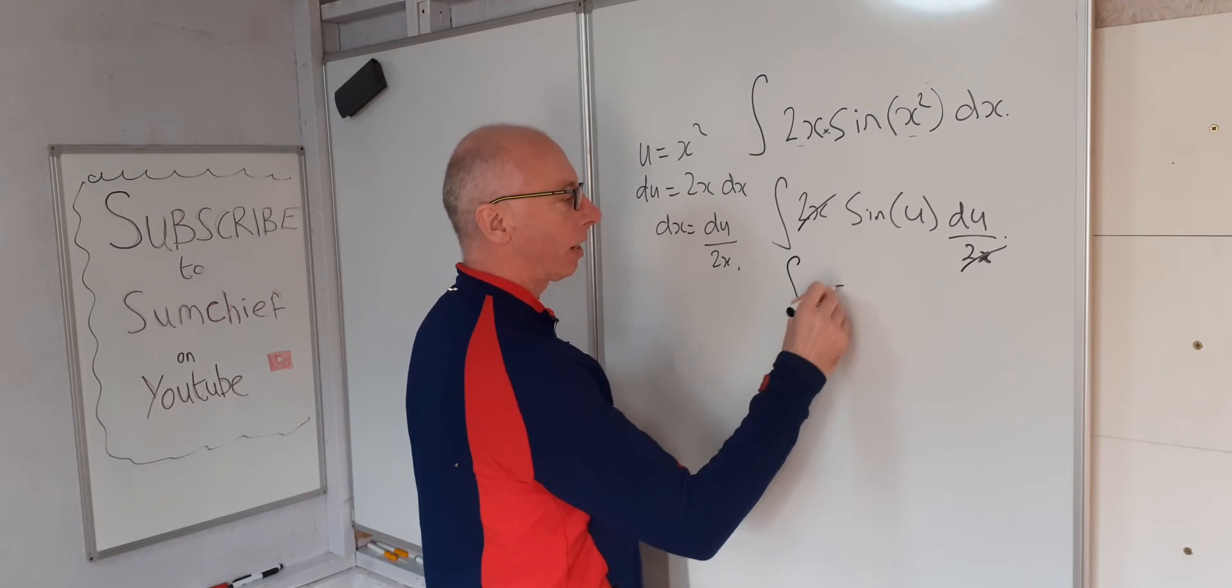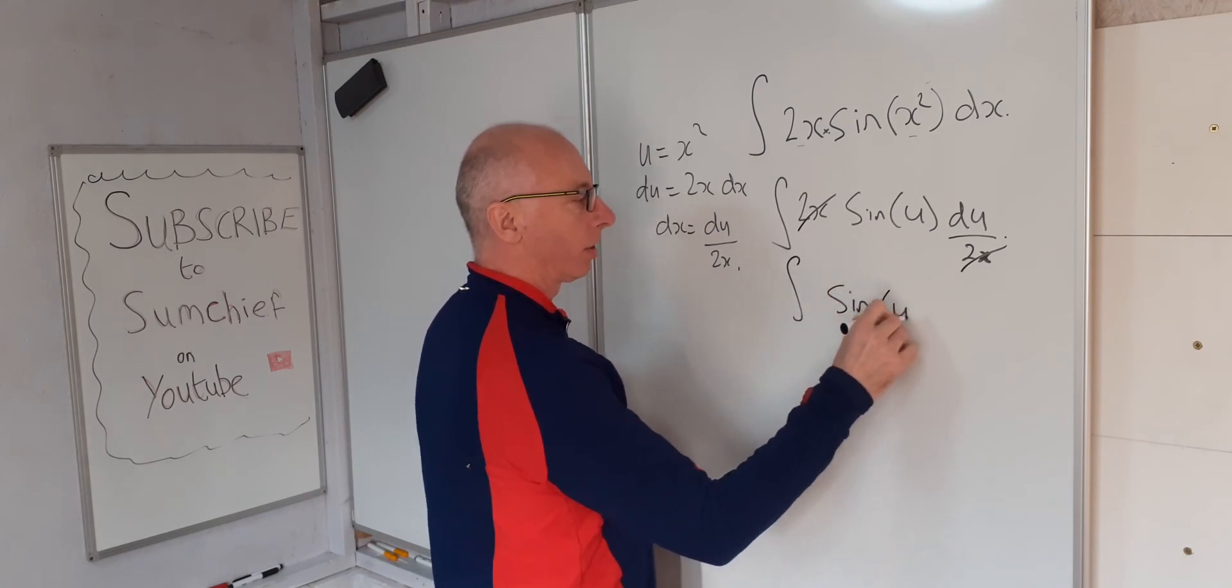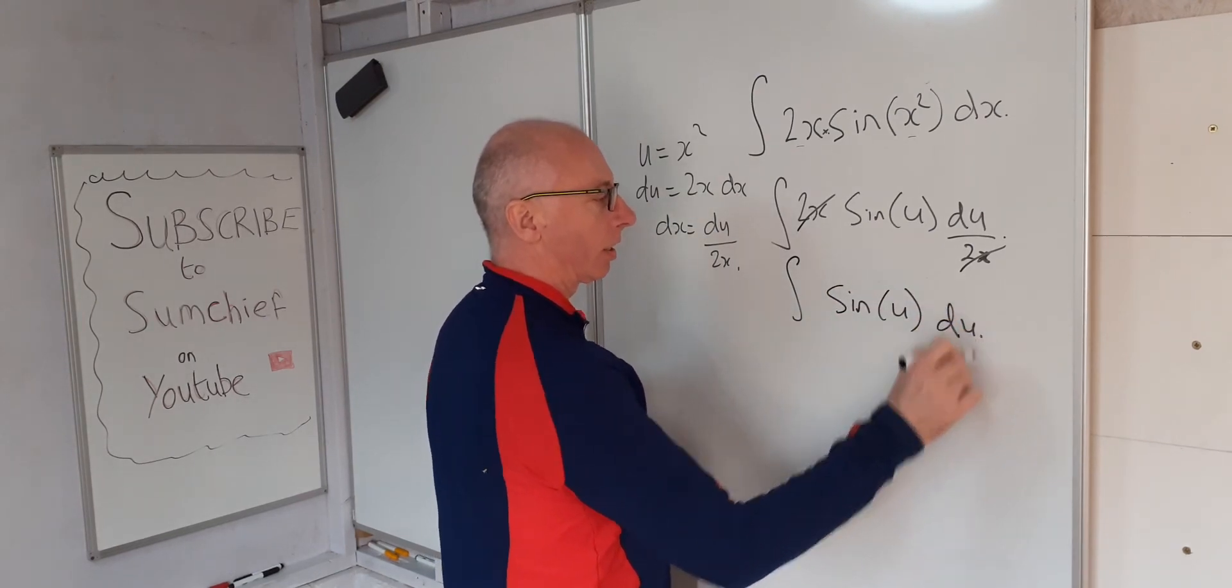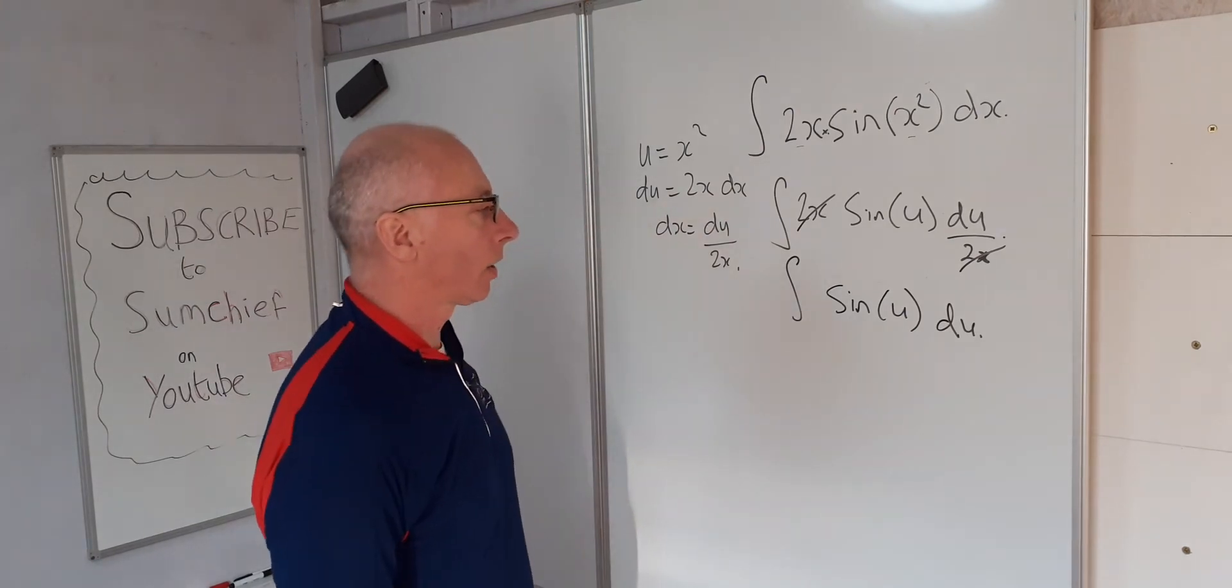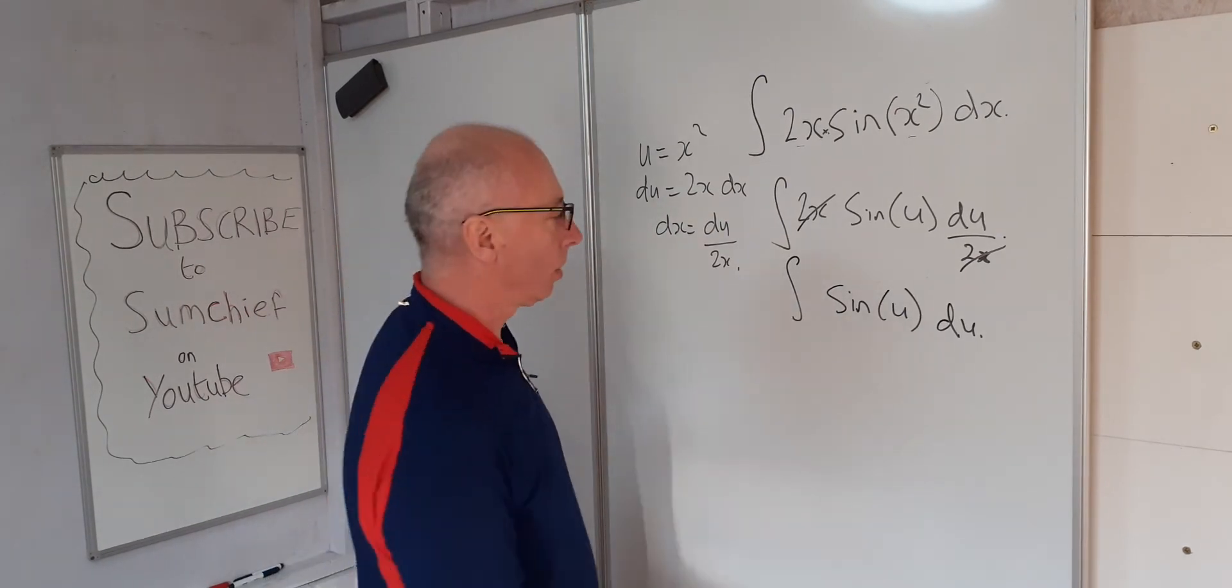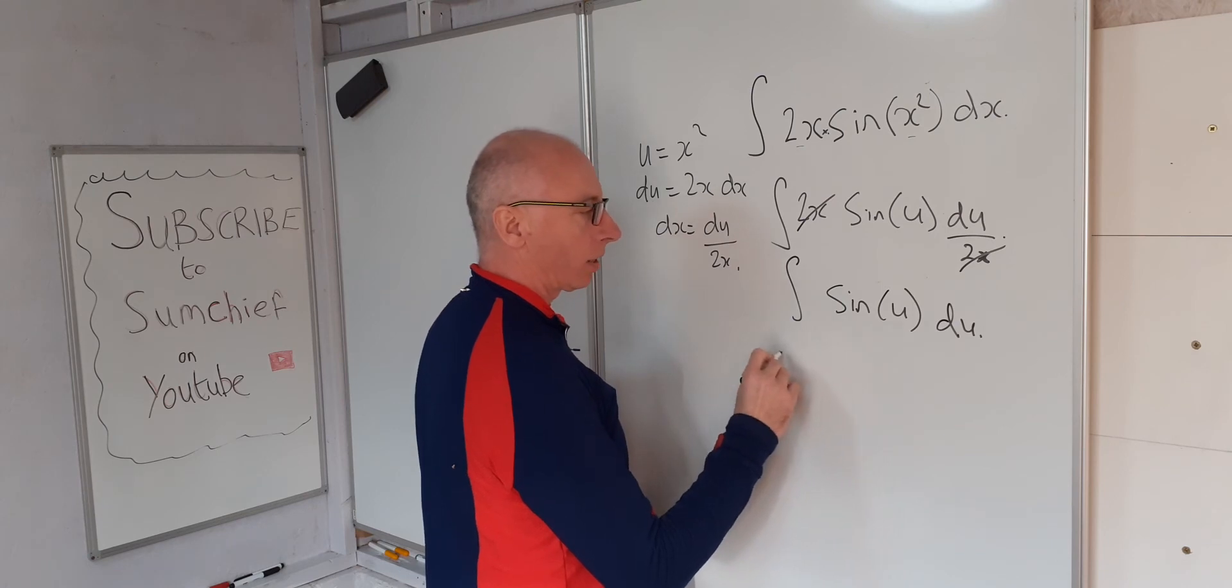So what we're left with now is the integral of sine of u du. The integral of sine of u is negative cosine, so what we end up with here now is negative cosine u.